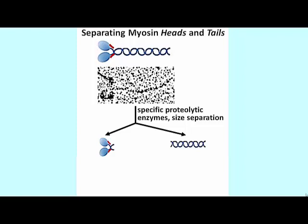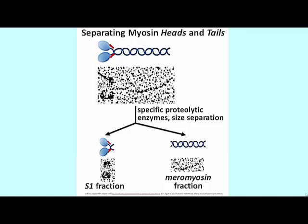Here are two fragments one might generate: one consisting of just the head region with the two heads still attached to and wound around one another, and the tail region. The EM pictures are not actually showing chopped-up myosin monomers — I have indicated the regions they represent based on the picture at the upper part of this slide. The head region is called the S1 head.